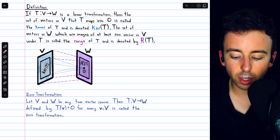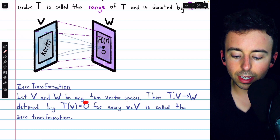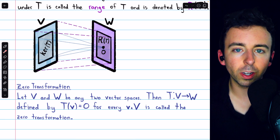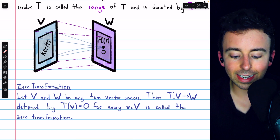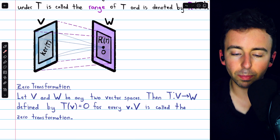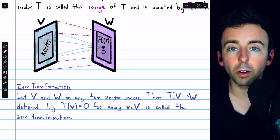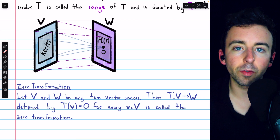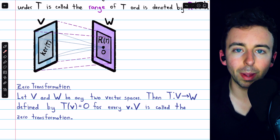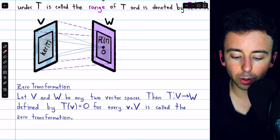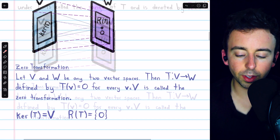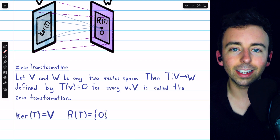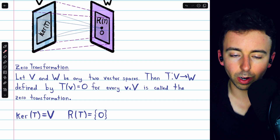A very simple linear transformation is the zero transformation, which maps each vector from the domain into the zero vector of the codomain. The kernel of the zero transformation is the entire domain, since every vector is mapped into zero. On the other hand, the range is just the set containing zero — that's the only thing this transformation outputs. So for the zero transformation, its kernel is the domain V, and its range is just the set containing the zero vector.